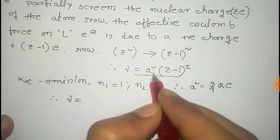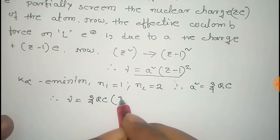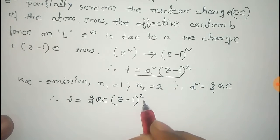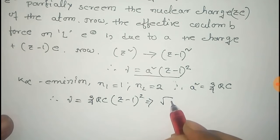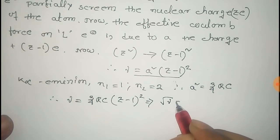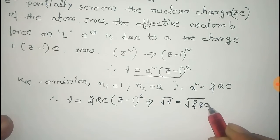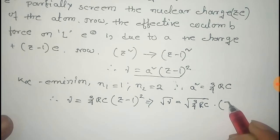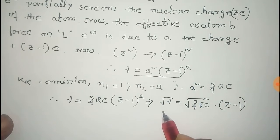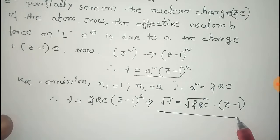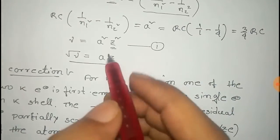Putting the value of a² = (3/4)Rc, the equation becomes: ν = (3/4)Rc × (Z − 1)². Taking the square root: root of ν = √(3/4 · Rc) × (Z − 1). Comparing this with Moseley's experimental equation, we can identify the constants a and b.